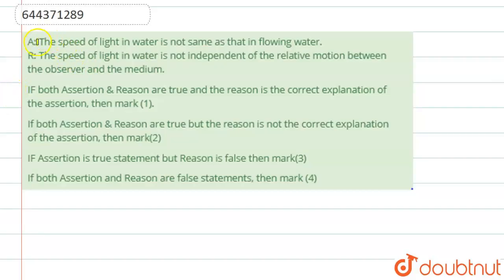The question says that it is an assertion and reason question. The assertion is: the speed of light in water is not same as that in flowing water. The reason given is: the speed of light is not independent of the relative motion between observer and medium.